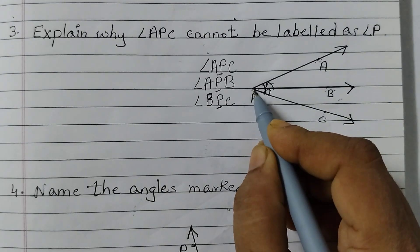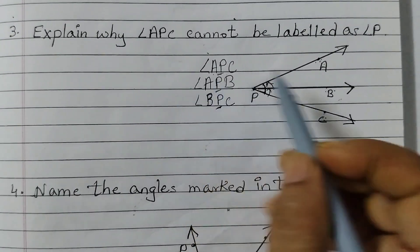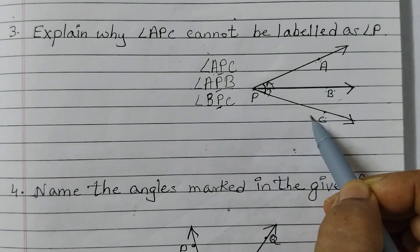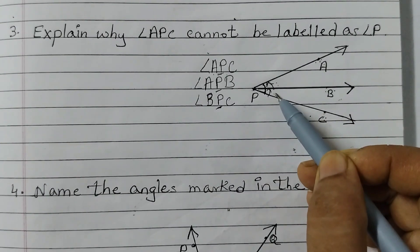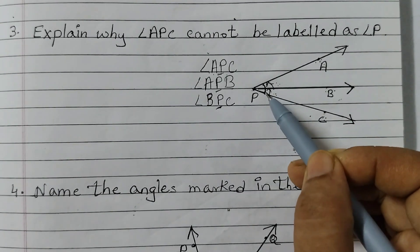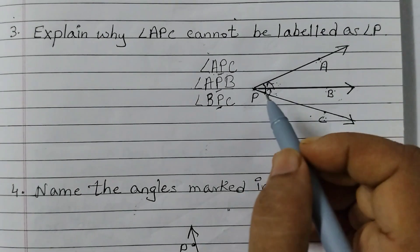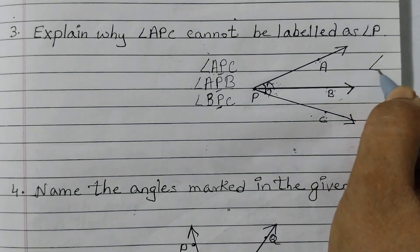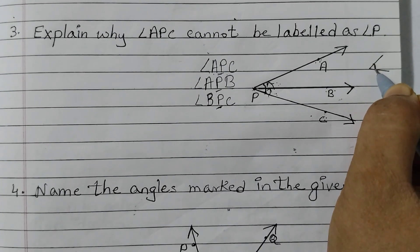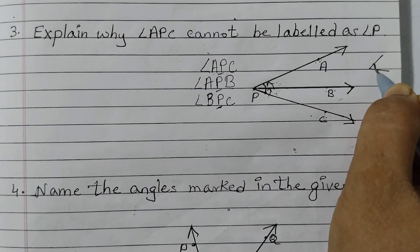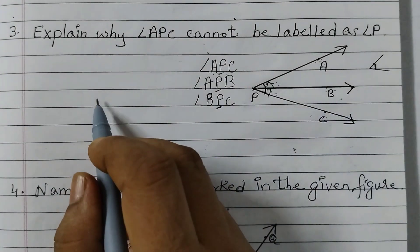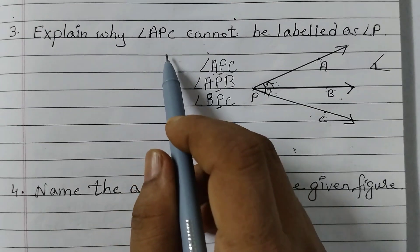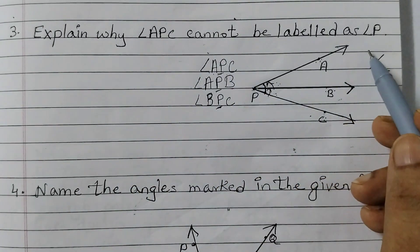So to avoid confusion, whenever we have more than 1 angle at the vertex, we would always use 3 letters to name the angle. Also, angle APC is a combination of these 2 small angles — when we add them up we get this angle. Just remember: if you have just 1 angle, you can use only the vertex to name it. But if you have more than 1 angle at the same vertex, always use 3 letters. That is why angle APC cannot be labelled as angle P.